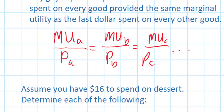There's no way for a consumer to increase his happiness if, at the present level of consumption, the last dollar spent on every good provided the consumer with the same amount of marginal utility.